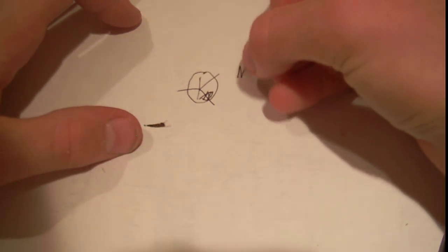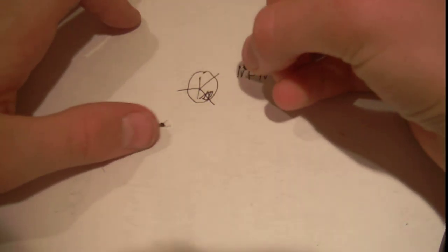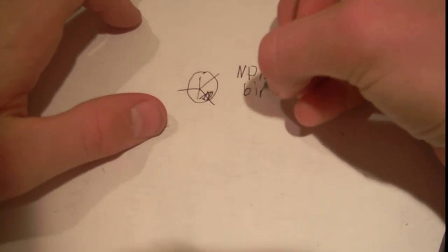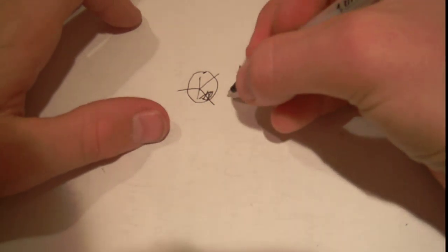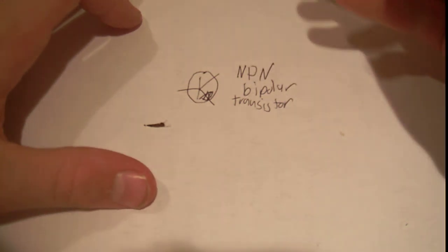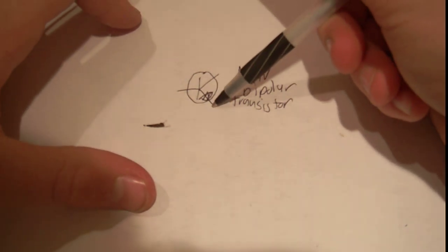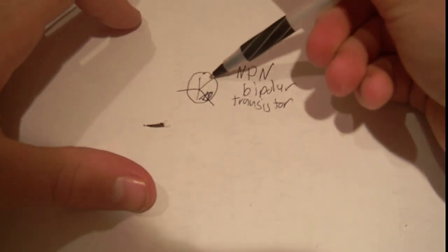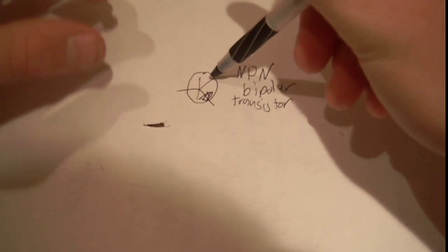So you might have seen this. This is an NPN bipolar transistor. It has three leads: emitter, base, and collector.